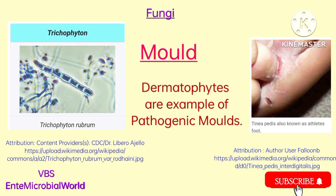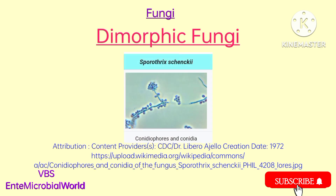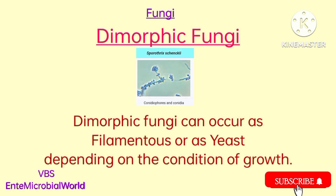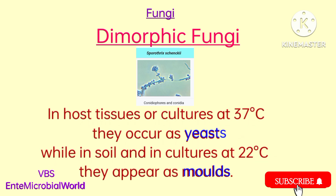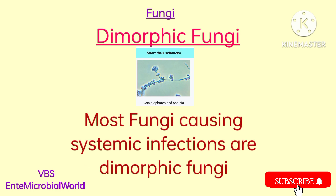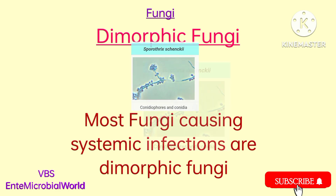Dimorphic fungi can occur as filamentous or as yeast depending on the condition of growth. In host tissues or cultures at 37 degrees Celsius they occur as yeasts, while in soil and in cultures at 22 degrees Celsius they appear as moulds. Most fungi causing systemic infections are dimorphic fungi.